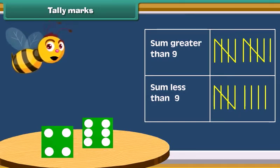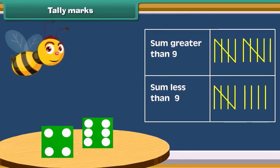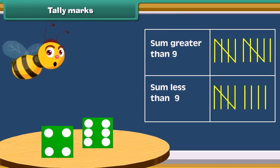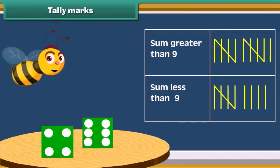Instead of counting each mark one by one, skip the count by fives and add remaining marks to the count. This makes counting quick.